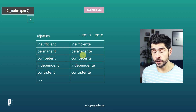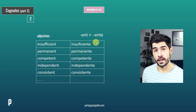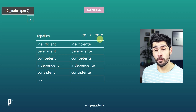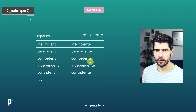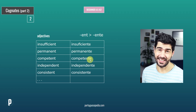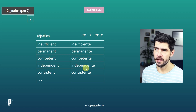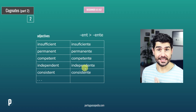Don't forget that for these words ending with E, this vowel will be mute or almost mute. There's still a vowel sound — competente — but it's very subtle. Independente.